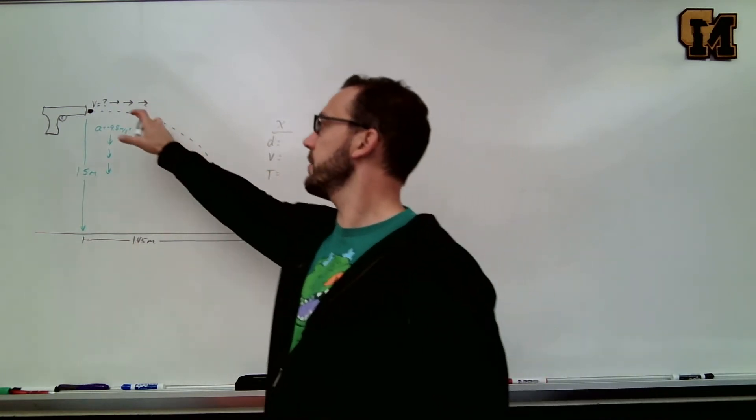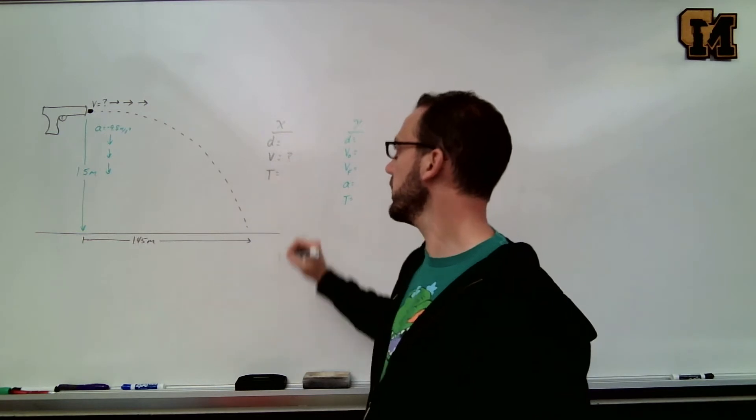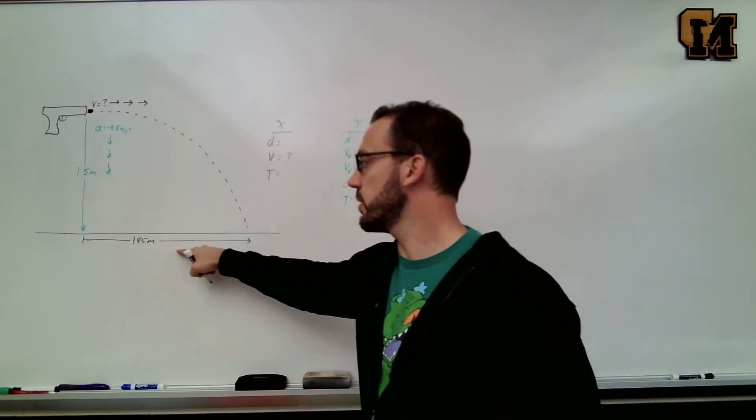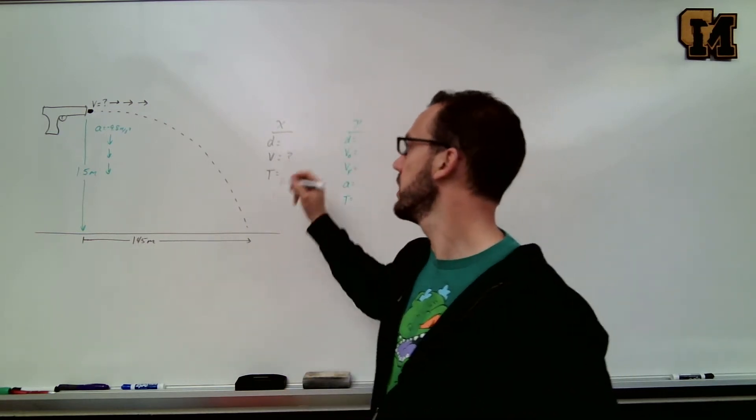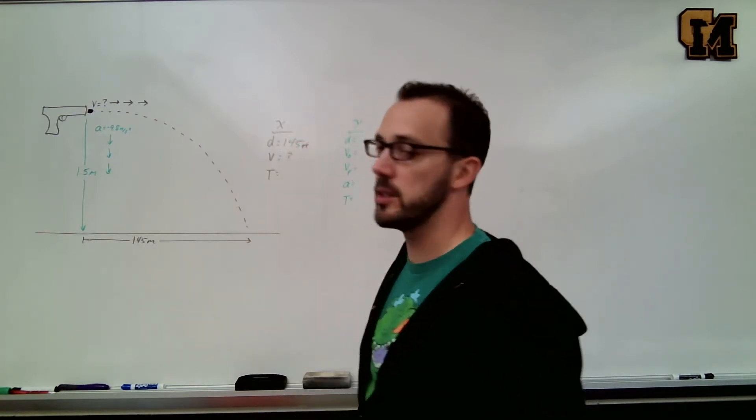So we know that we're trying to figure out how fast this thing is going in the x direction, so that's the question mark. We know that it's going to travel 145 meters to the right, so that's our x displacement.